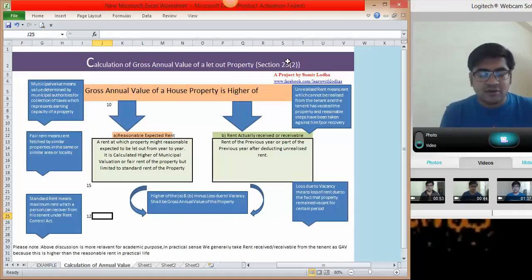So here we go, we have calculated rent actually received or receivable net of unrealized rent. Further on you have to compare these two amounts, higher of A or B. A is the reasonably expected rent and B is rent actually received or receivable. Higher of two you have to take.